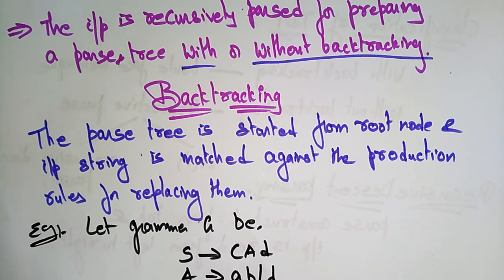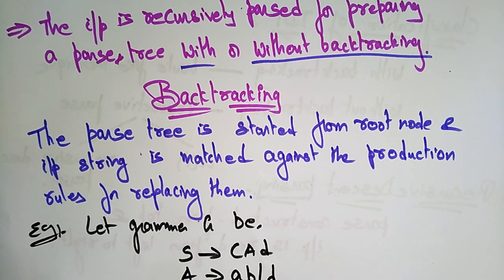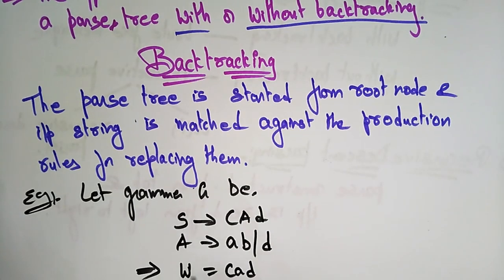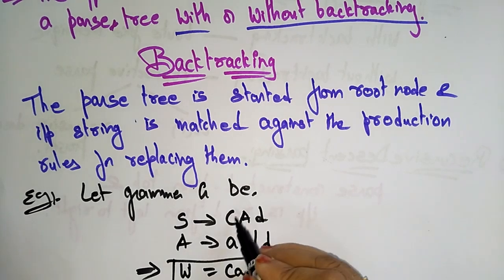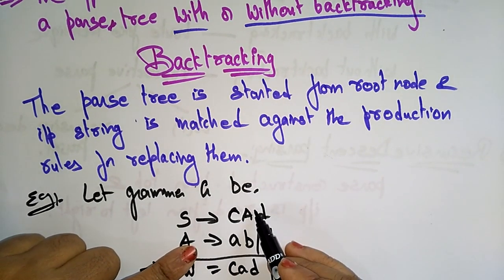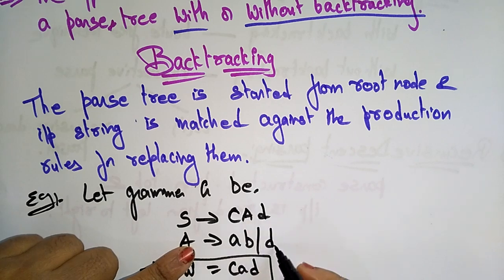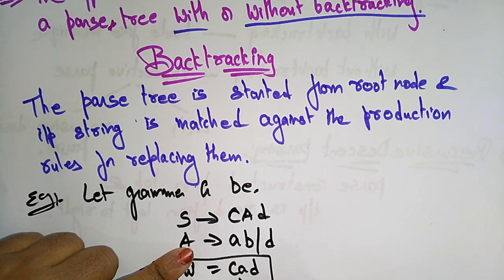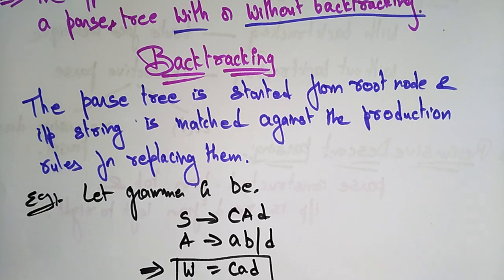The input string w that we need to derive is w = cad. Here, A is a non-terminal, so in place of A you can substitute ab or d. But the goal is to get w = cad. Let's construct the parse tree.